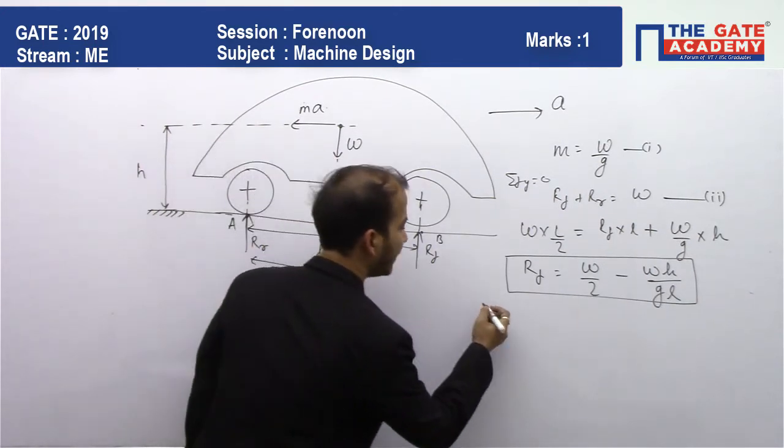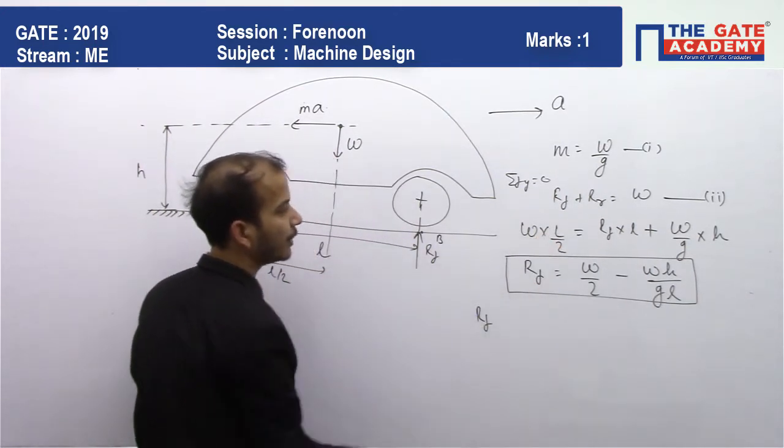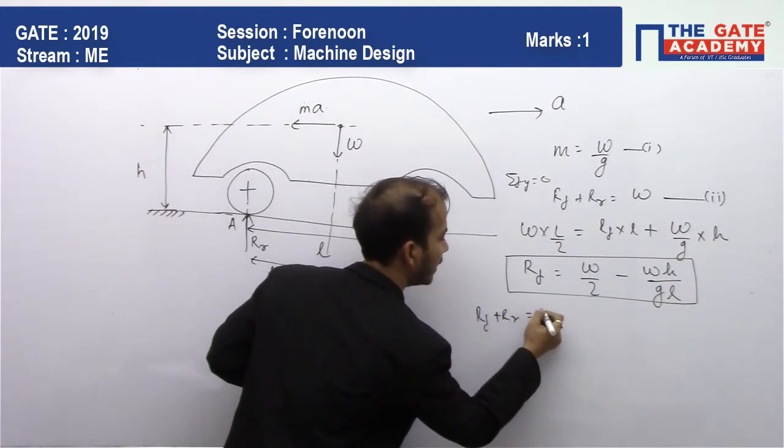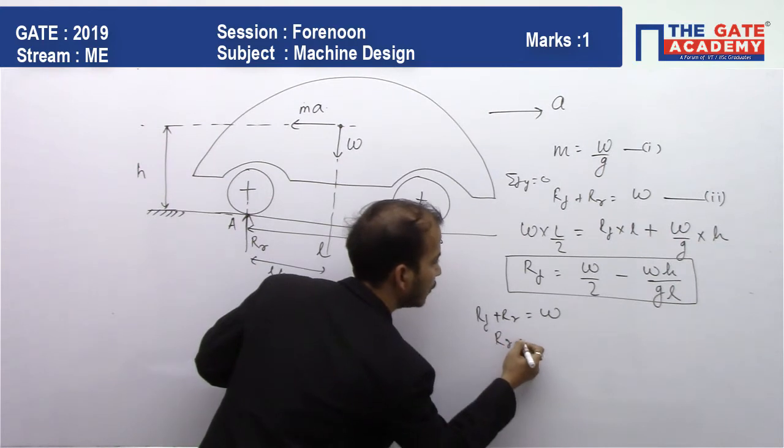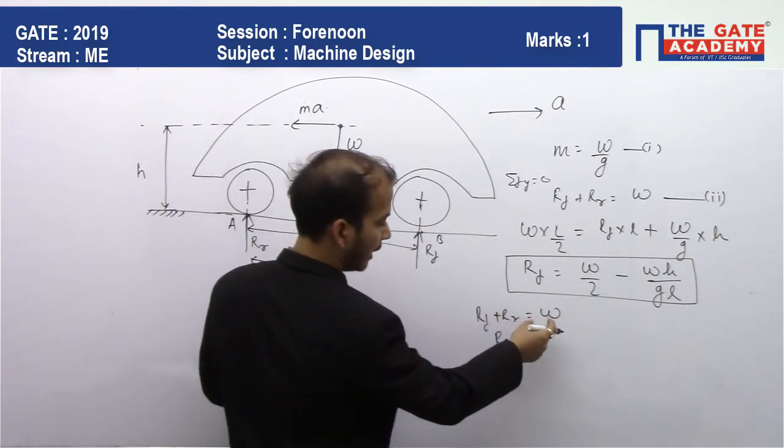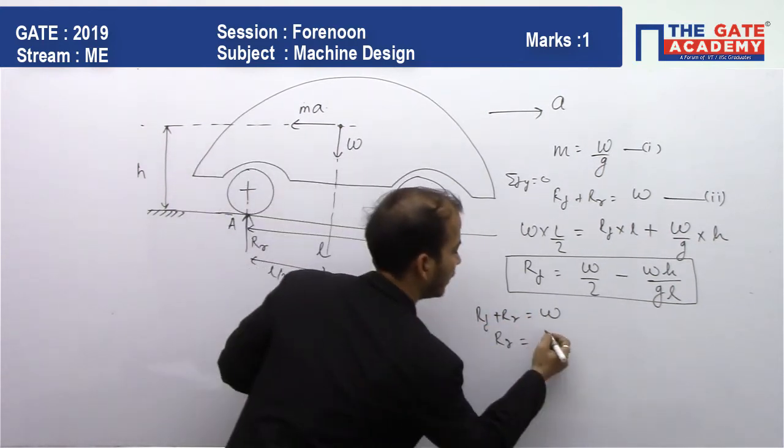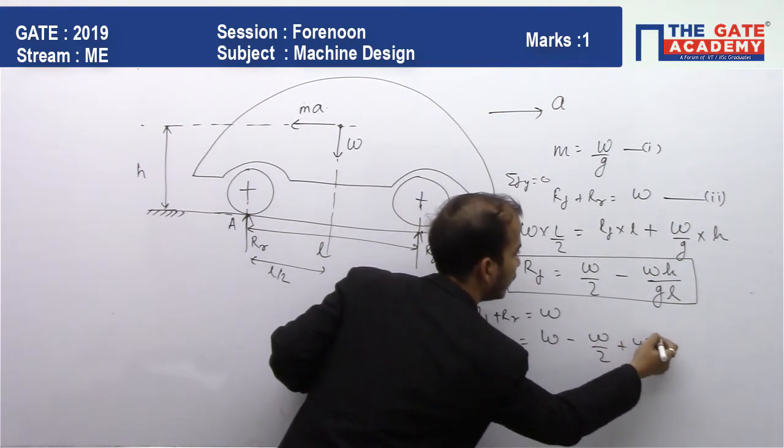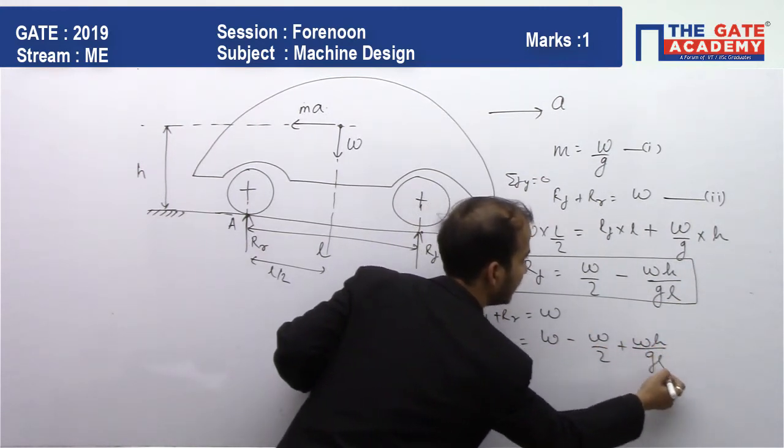Now we'll also determine Rr using equation two. Rf plus Rr equals W, so the value of Rr will be W minus Rf, which is W minus W by 2 plus Wha by gl.